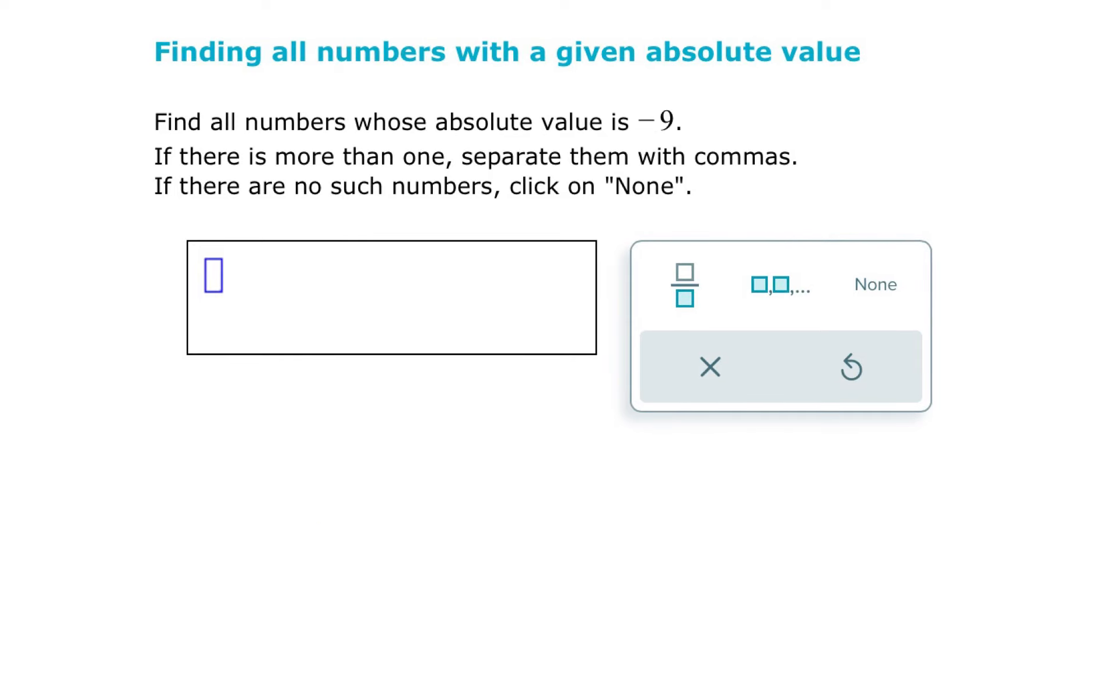And one more example. We want all the values of x whose distance from 0 is negative 9. And this is an example of a problem with no solution because it is not possible for the absolute value of a number to be negative. We are looking for all the values of x whose distance from 0 is negative 9, and their distance will never be negative. It will always be positive. So what we will put is x is none.